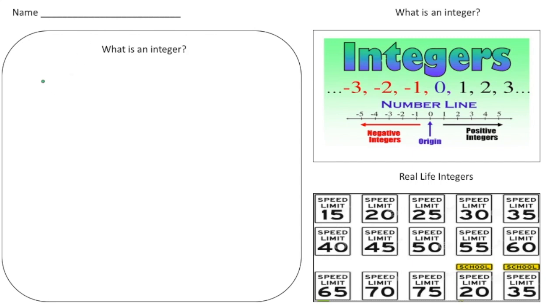So here's the actual definition I want you to write down. An integer is a whole number that can be positive, negative, or zero.